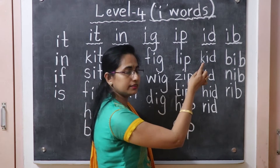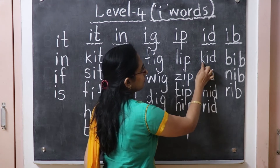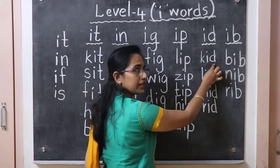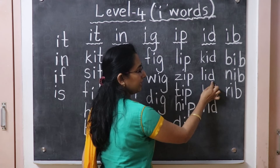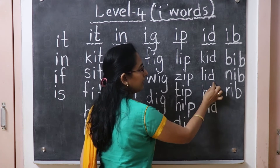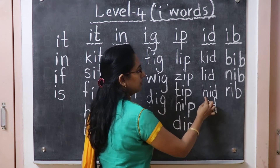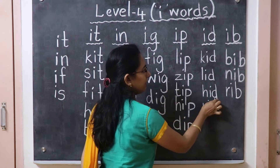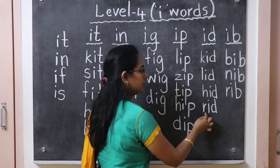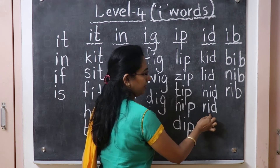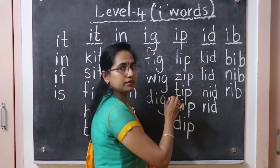Next one is -id. K-id: kid. L-id: lid. H-id: hid. R-id: rid.